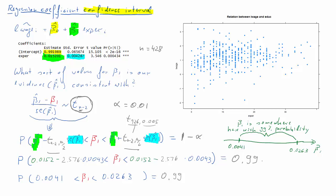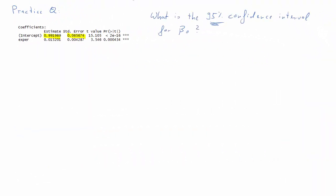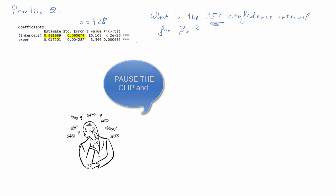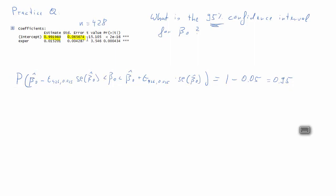We've done a confidence interval — so why not apply this technique in a practice question? We have the same regression output, but now calculate the 95% confidence interval for beta 0. Remember, n is 428. We'll start with the same confidence interval formula, just now looking at beta 0 — meaning it's the yellow values we need: beta 0 hat and the standard error of beta 0 hat.